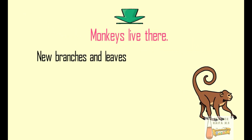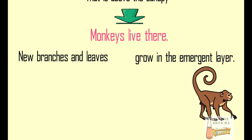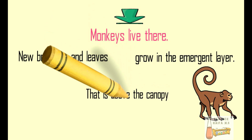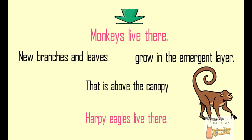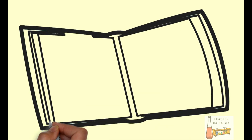New branches and leaves grow in the emergent layer. That is above the canopy. Harpy eagles live there.